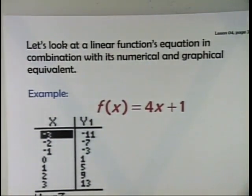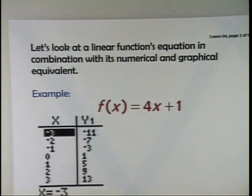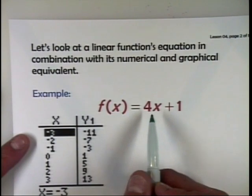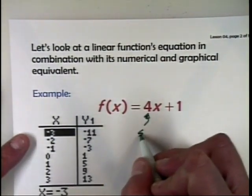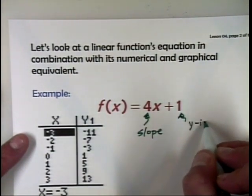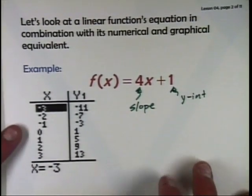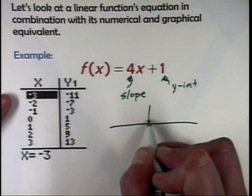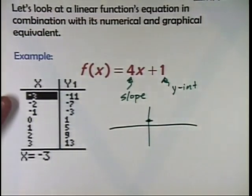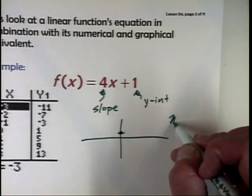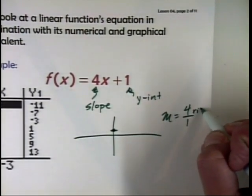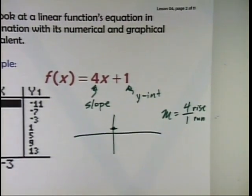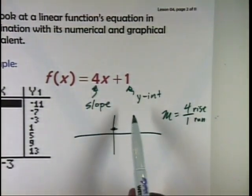Let's look at a linear function's equation in combination with its numerical and graphical equivalents, because we want to represent things symbolically through the equation, numerically through a table of values, and graphically. Here's a linear equation: f of x is 4x plus 1. Four is the coefficient of x, and it's in slope-intercept form, so 4 is the slope and 1 is the y-intercept. To sketch a graph, draw a coordinate plane, start with the y-intercept — go up 1 on the y-axis. The slope is a ratio of rise to run: this graph increases vertically four times faster than it moves horizontally.